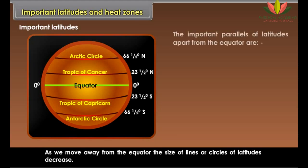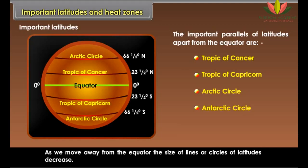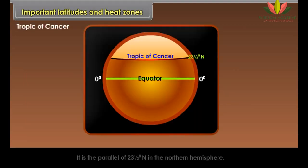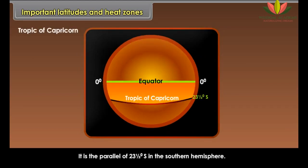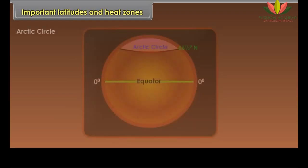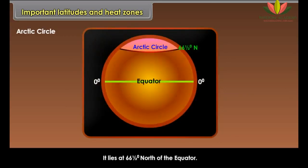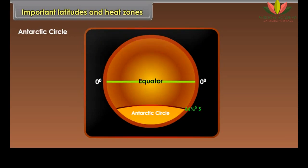Important Latitudes. The important parallels of latitudes apart from the equator are: Tropic of Cancer, Tropic of Capricorn, Arctic Circle, and Antarctic Circle. Tropic of Cancer is the parallel of 23 and a half degrees north. The Arctic Circle lies at 66 and a half degrees north of the equator. The Antarctic Circle lies at 66 and a half degrees south of the equator.